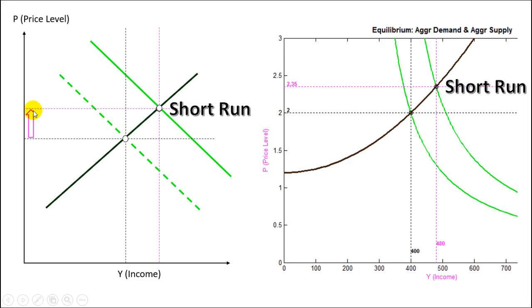But what happened after the short run? The workers see that the price level increases so they lose purchasing power, so they ask for higher salaries. And firms increase costs because they have to pay higher salaries and because the costs increase, firms increase prices.